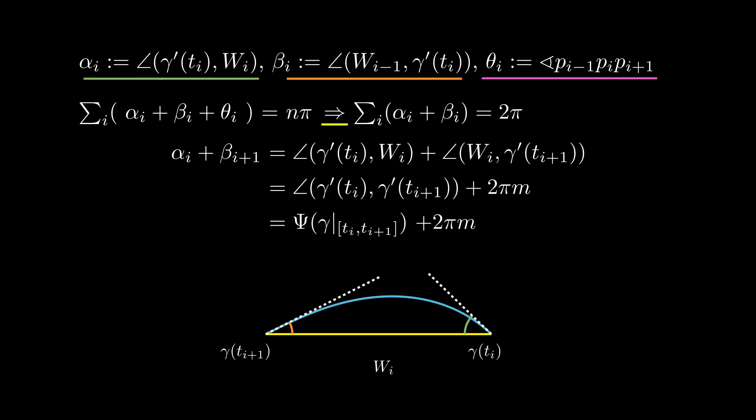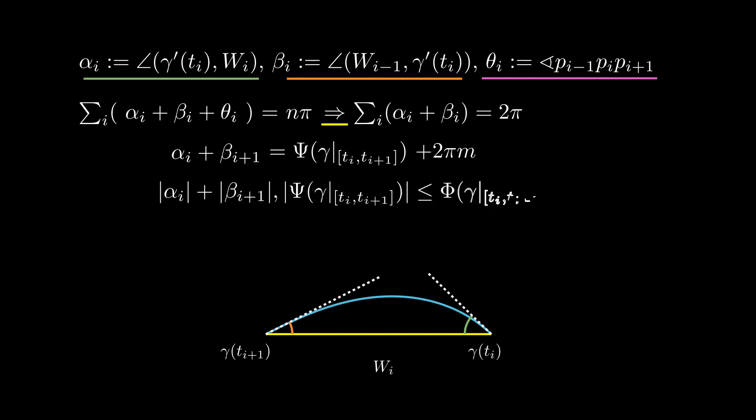However, the total signed curvature along an interval is controlled in absolute value by the total curvature along that interval, and by the chord lemma the same is true for α_i + β_{i+1}. By our choice of partition, this total curvature is strictly less than π, and hence α_i + β_{i+1} equals ψ along the interval.